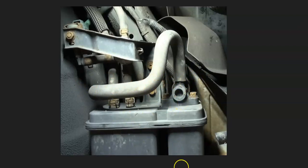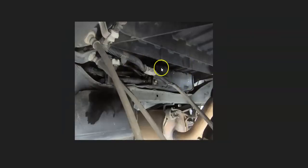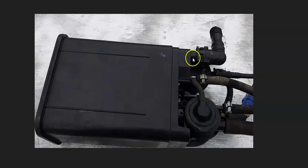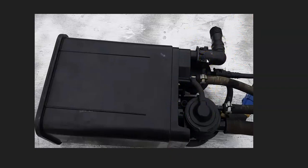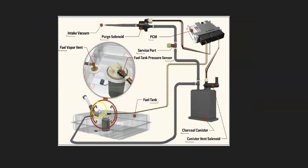The charcoal canister is located up underneath the vehicle by the gas tank and will have hoses and wiring harnesses going to it. Mainly what you check is the vent valve — make sure it's opening and shutting properly — and confirm that no hoses look damaged and none of the wiring looks damaged.